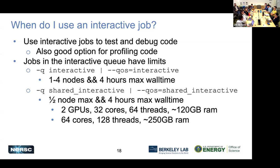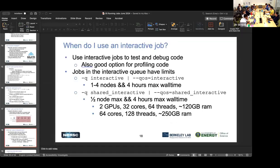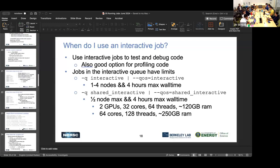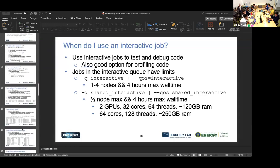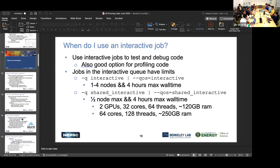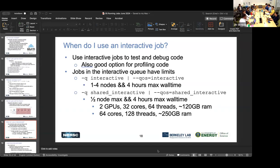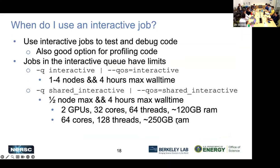What are the different QoS values? There's interactive, debug, and others — there is a whole table on the NERSC website. There are different options available. That constrains you to the type of limitations for your computation. If you need more time outside of the four hours on an interactive job or need larger nodes, then you want to use a batch job.